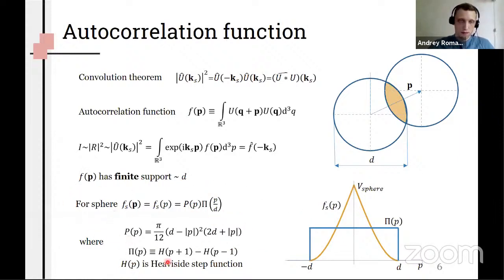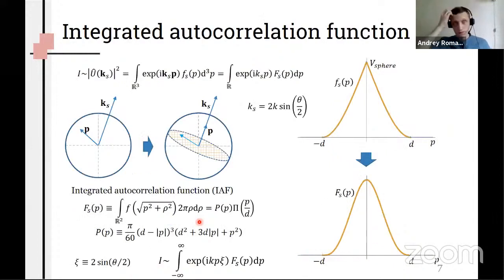This support is proportional to the size of the particle. For example, for sphere it has this form. Further, we can reduce the three-dimensional Fourier transformation to one-dimensional by integrating the correlation function over planes of constant phase in this integral and obtain integrated autocorrelation function. For sphere it will increase the decay rate at the support border.